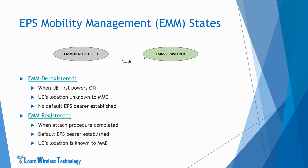UE finds a suitable PLMN and selects a suitable cell to register. After completing the attach procedure, UE registers with the network, enabling the transfer of signaling messages. UE is allocated a serving gateway and an IP address is assigned to it. UE establishes a default bearer with the network for transferring application data. After attaching to the network, the UE's location will be known to the MME. During the attach procedure, when UE establishes a default bearer, it has an active PDN connection which keeps the UE in EMM registered state. When the default bearer is deactivated or the PDN connection is disconnected, the UE moves back to EMM deregistered state. UE can also transit to EMM deregistered state when it performs the detach procedure, moves to an out-of-coverage area, or when the tracking area update request is rejected by the network.